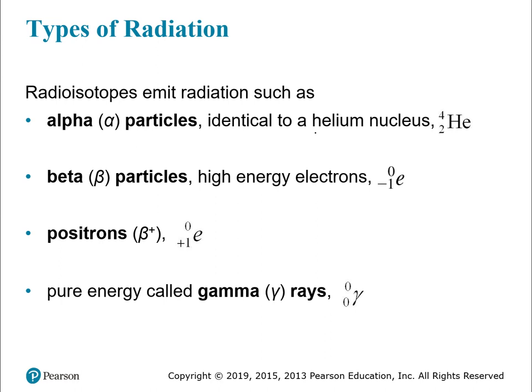Alpha particles are just a helium nucleus — mass number of four, atomic number of two. Beta particles are high-energy electrons with an atomic number of negative one and no mass number — no protons, no neutrons. A positron is like an electron but positive — a positive electron. And then there's pure energy like gamma rays, where there are no particles, just energy.